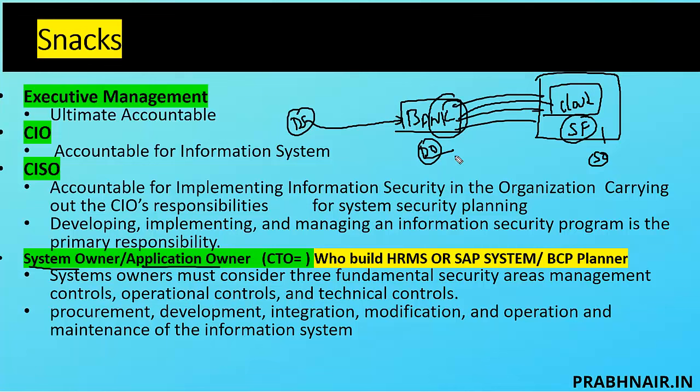System owners consider three fundamental security areas: management controls (administrative controls), operational controls, and technical controls. They are responsible for procurement, development, integration, modification, operation, and maintenance of the information system — responsible for end-to-end controls. For example, the IAM team has controls in place; the database team ensures necessary controls in their system; the cloud applies necessary controls so the bank can store data securely. In this case, the bank is the data owner.